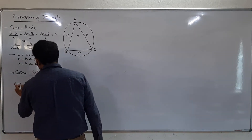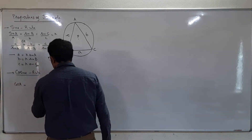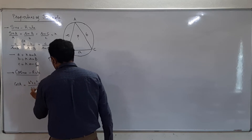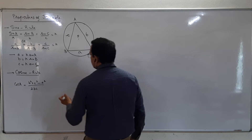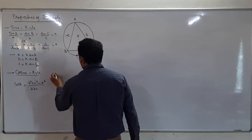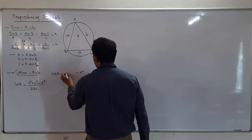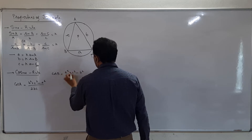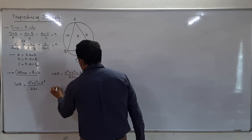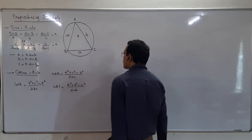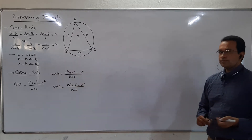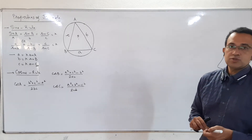For the cosine rule: cos A equals b squared plus c squared minus a squared upon 2bc. If it is cos B, we have minus b squared with a squared and c squared upon 2ac. And if it is cos C, we have minus c squared, a squared plus b squared upon 2ab.